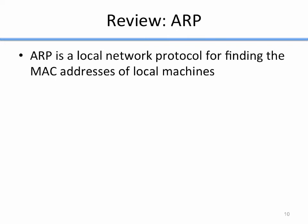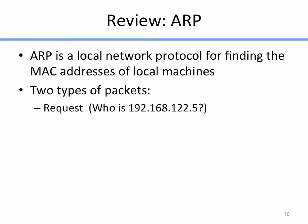ARP is a network-level protocol for finding MAC addresses of local machines — ARP stands for Address Resolution Protocol. There are two types of ARP packets: an ARP request, where a machine on the local segment asks 'who has 192.168.122.5?', and whoever has that IP replies saying 'I am.' What you're trying to do is figure out each other's MAC addresses — on the local network segment, packets are addressed using MAC addresses, not IP addresses. So if the router needs to send a packet to a machine and only knows its IP, it uses ARP to find the MAC address.